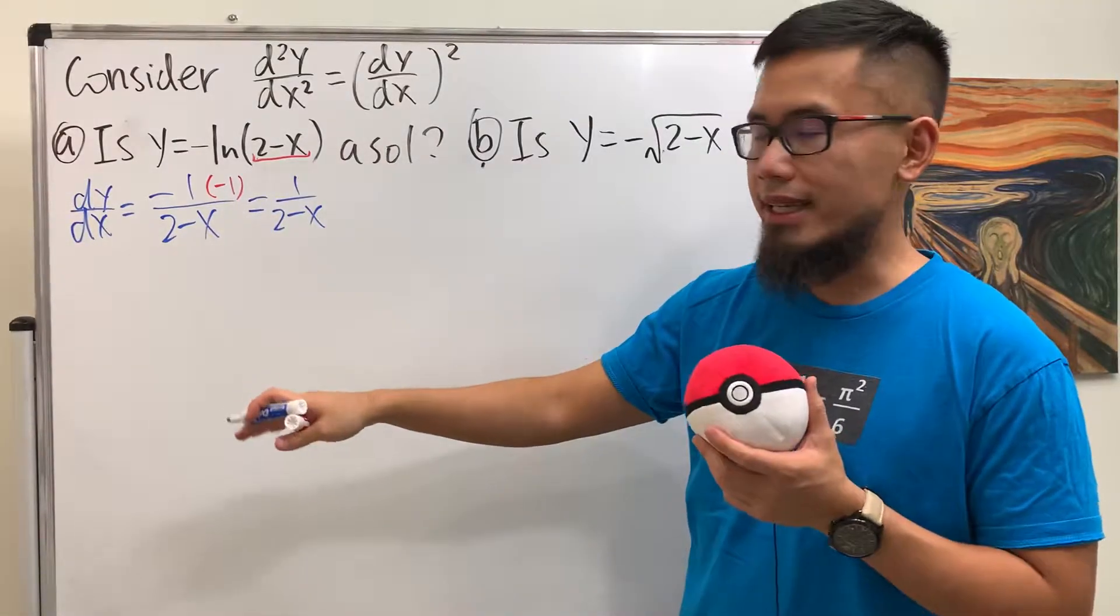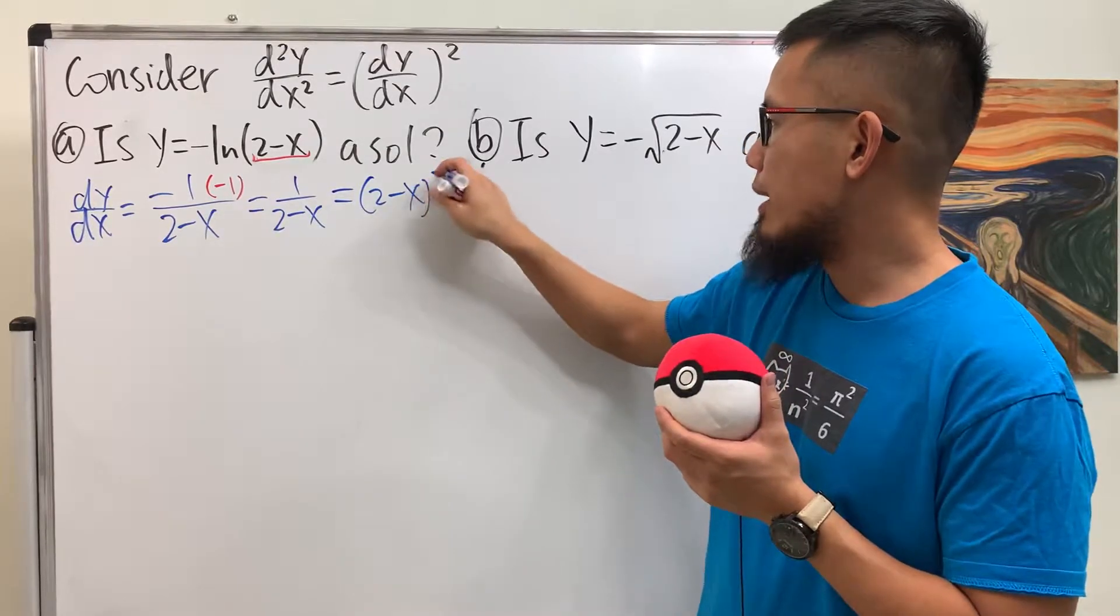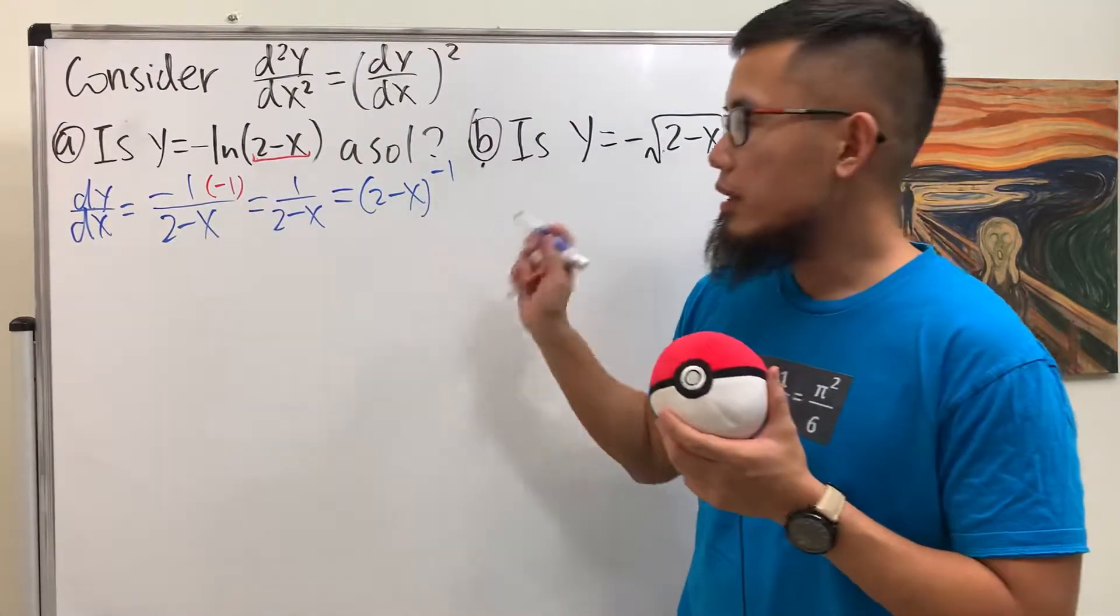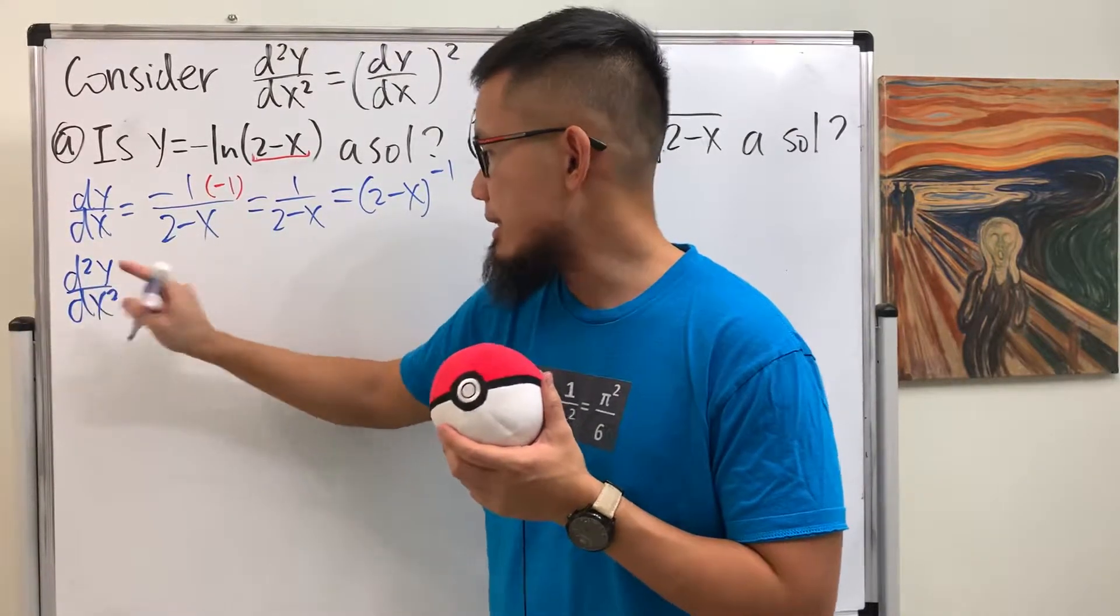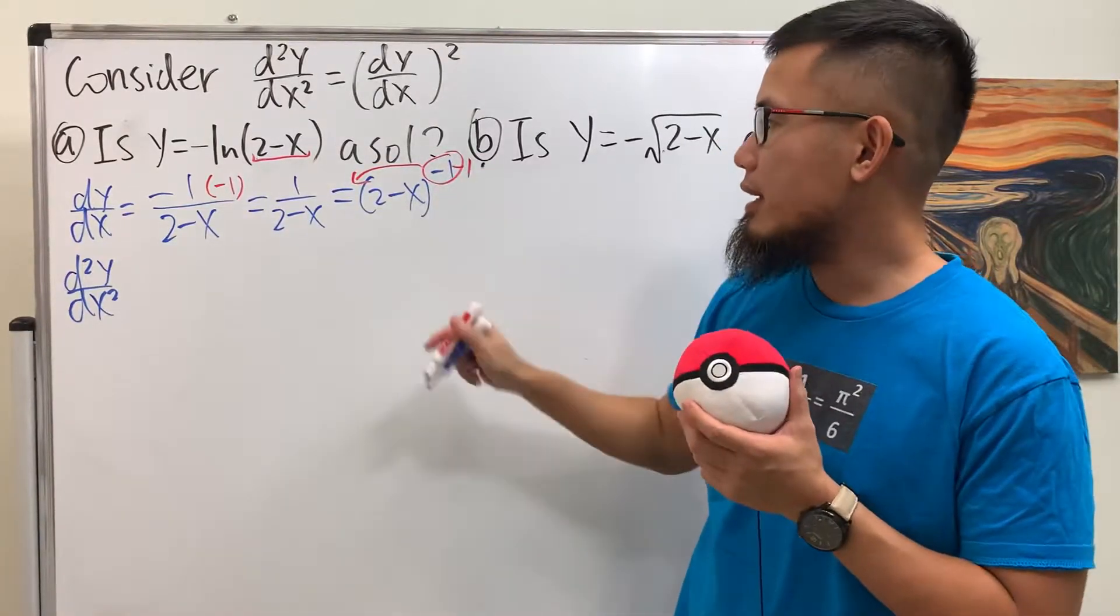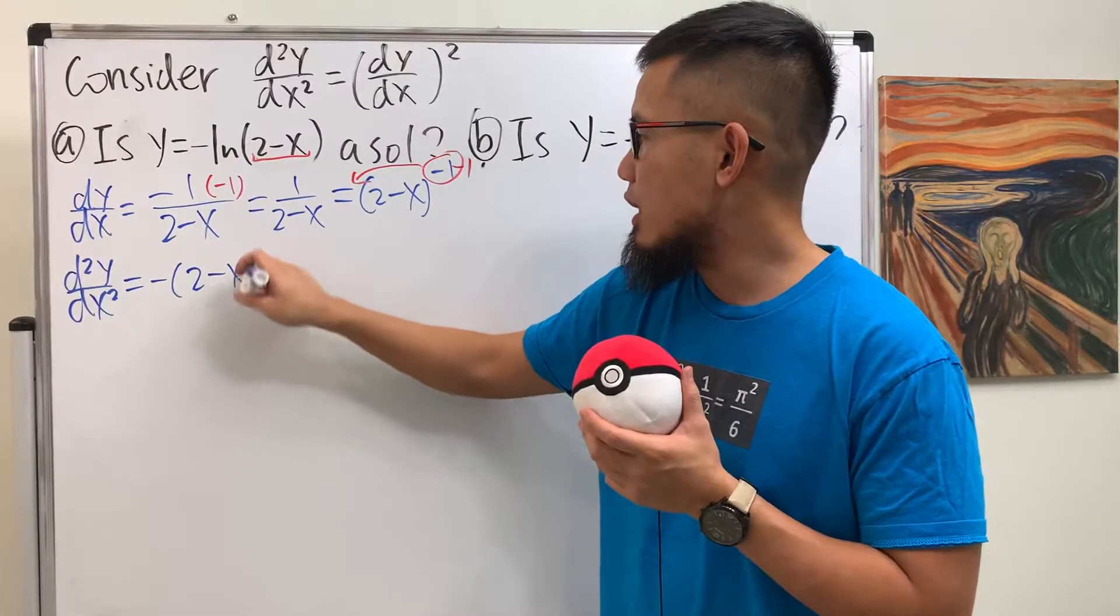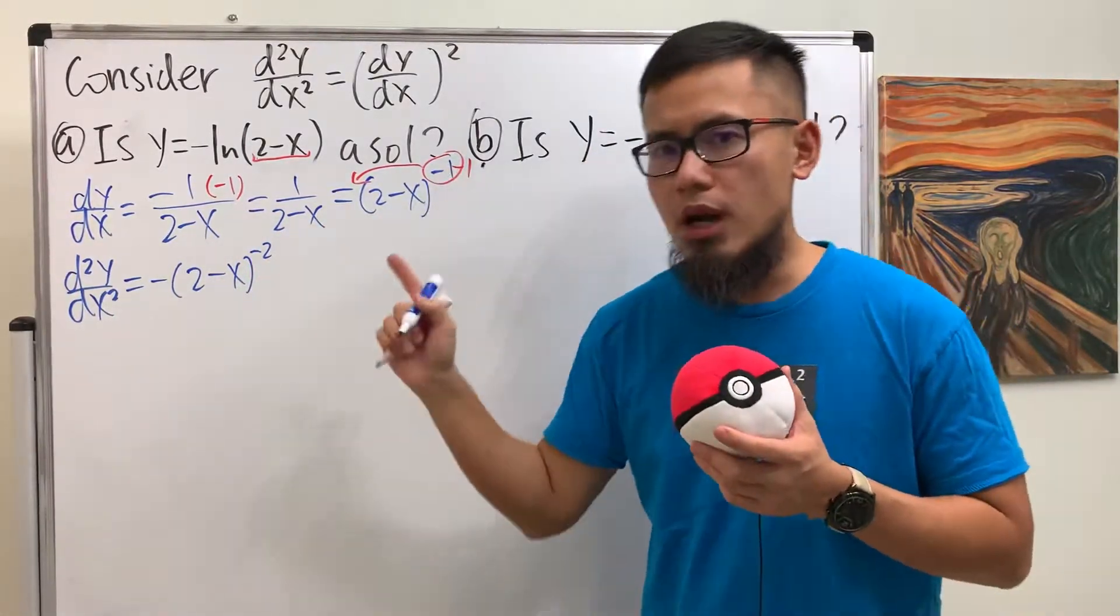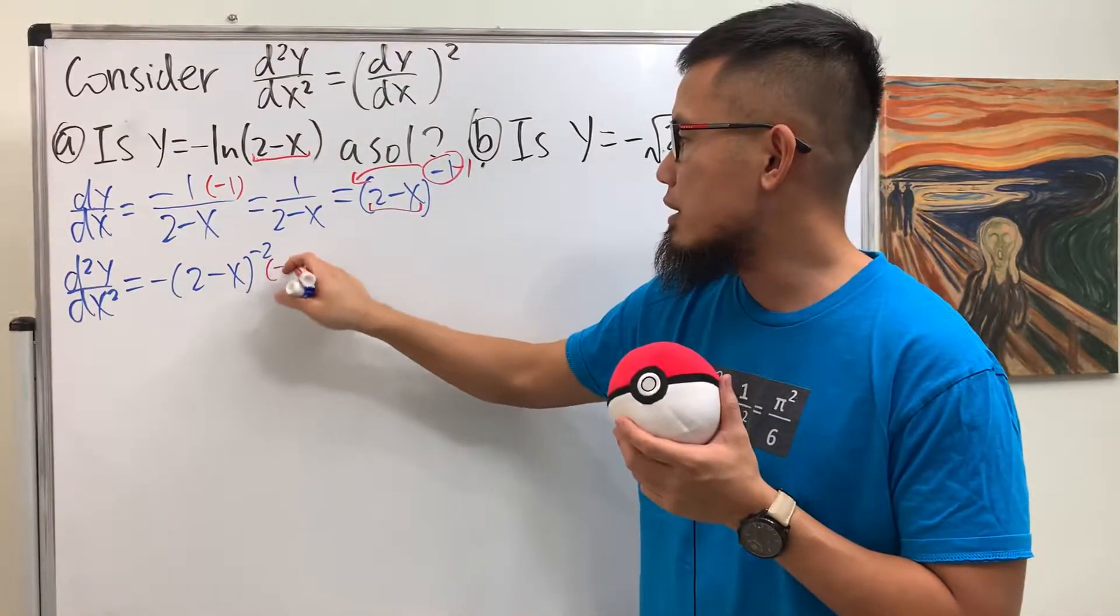And because we have to go to the second derivative, let's write that as (2-x) raised to the negative 1 power. This way, when we do the derivative again, that's the notation. We can just put the negative 1 in the front and the minus 1. So we have negative parentheses (2-x) raised to the negative 2 power. But again, the chain rule multiplied by the derivative inside, which is negative 1.